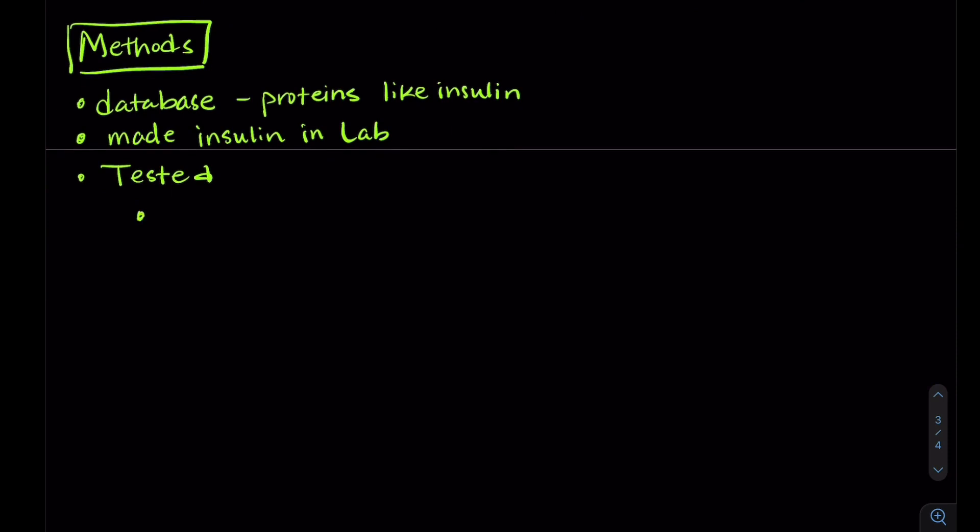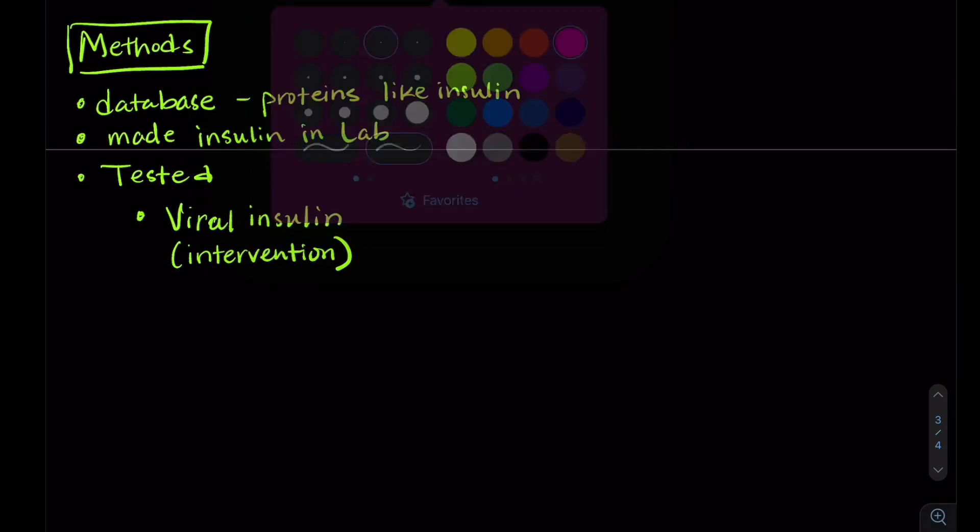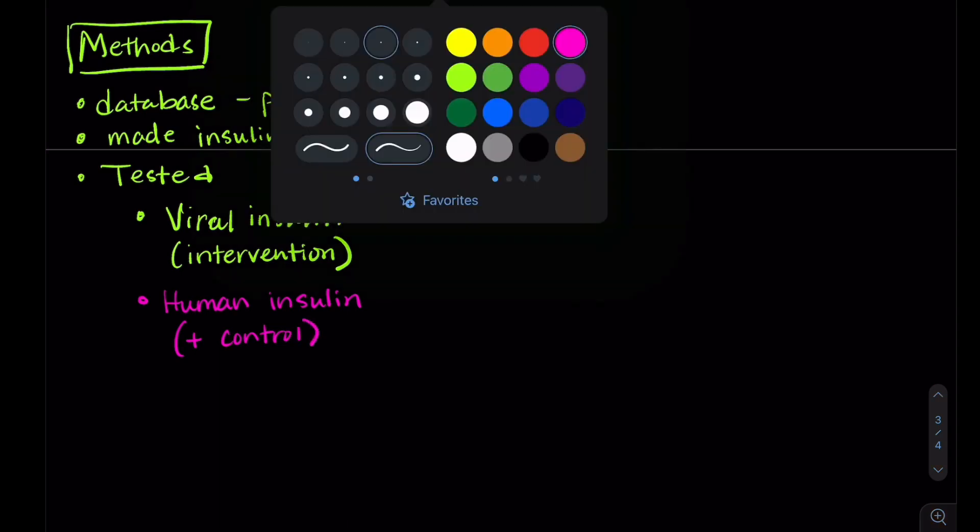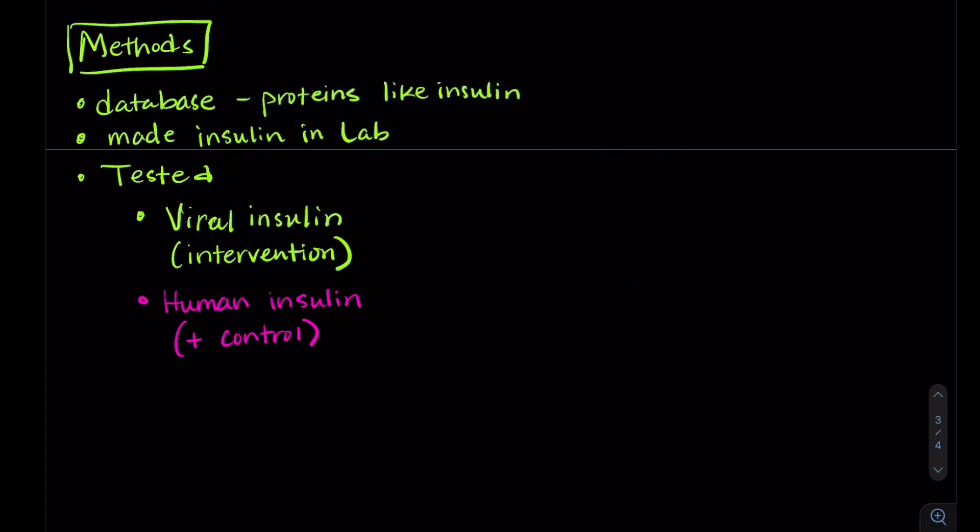And to test it, they had three different treatments. So the first treatment they had was this viral insulin that they had synthesized in their laboratory. We called this the intervention group. And this is the one that we actually don't know what's going to happen and this is what we are testing. The second treatment that they had was human insulin and human insulin served as their positive control. So they know that human insulin should work. It should have some kind of impact on glucose. The third treatment was just saline, so a saltwater solution. And this was their negative control. This isn't related to glucose or insulin. They didn't expect anything to change there.